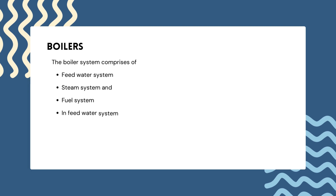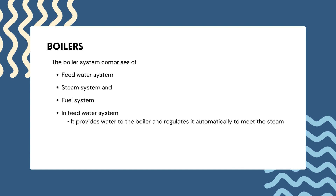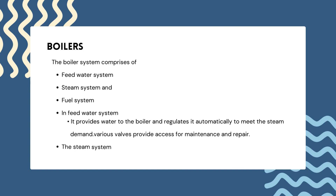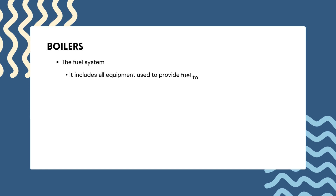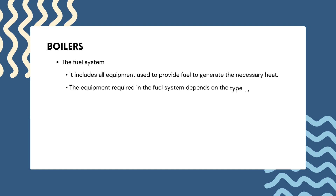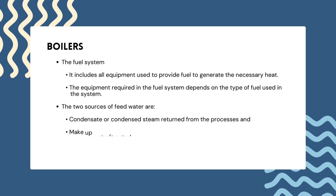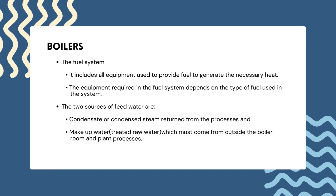The boiler system comprises a feed water system, steam system and fuel system. The feed water system provides water to the boiler and regulates it automatically to meet steam demand. The steam system collects and controls the steam produced in the boiler, directing it through piping to the point of use. The fuel system includes all equipment used to provide fuel to generate the necessary heat. The two sources of feed water are condensate returned from processes and makeup water treated from outside the plant.